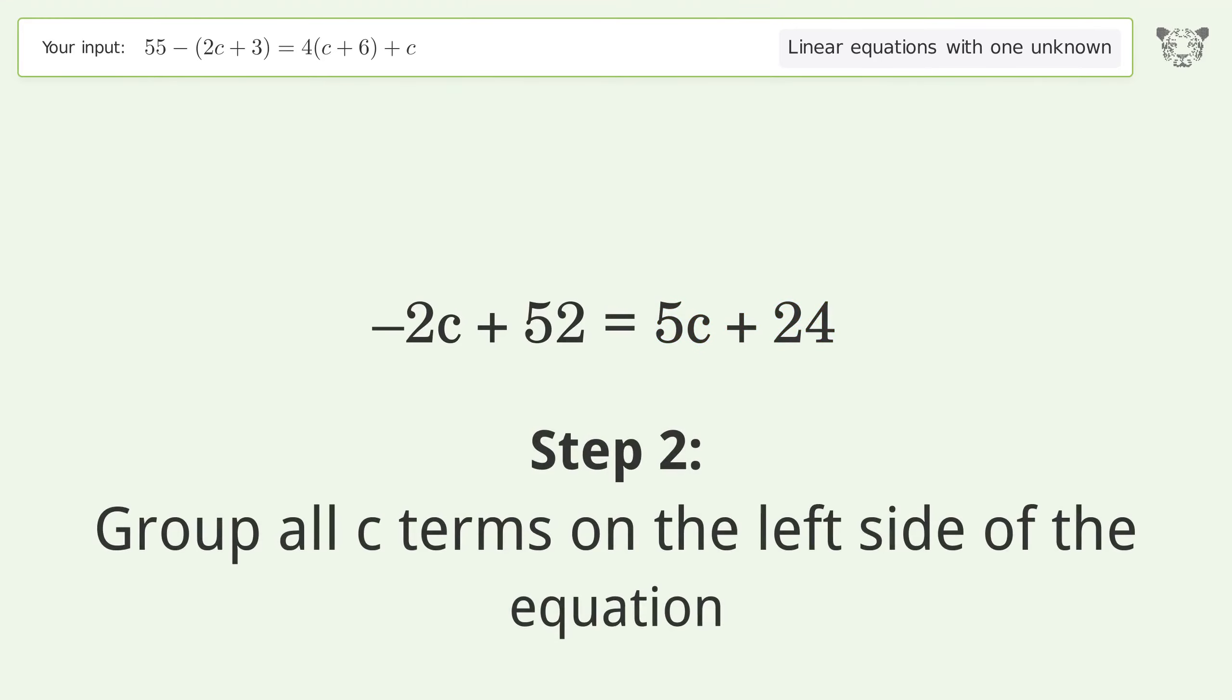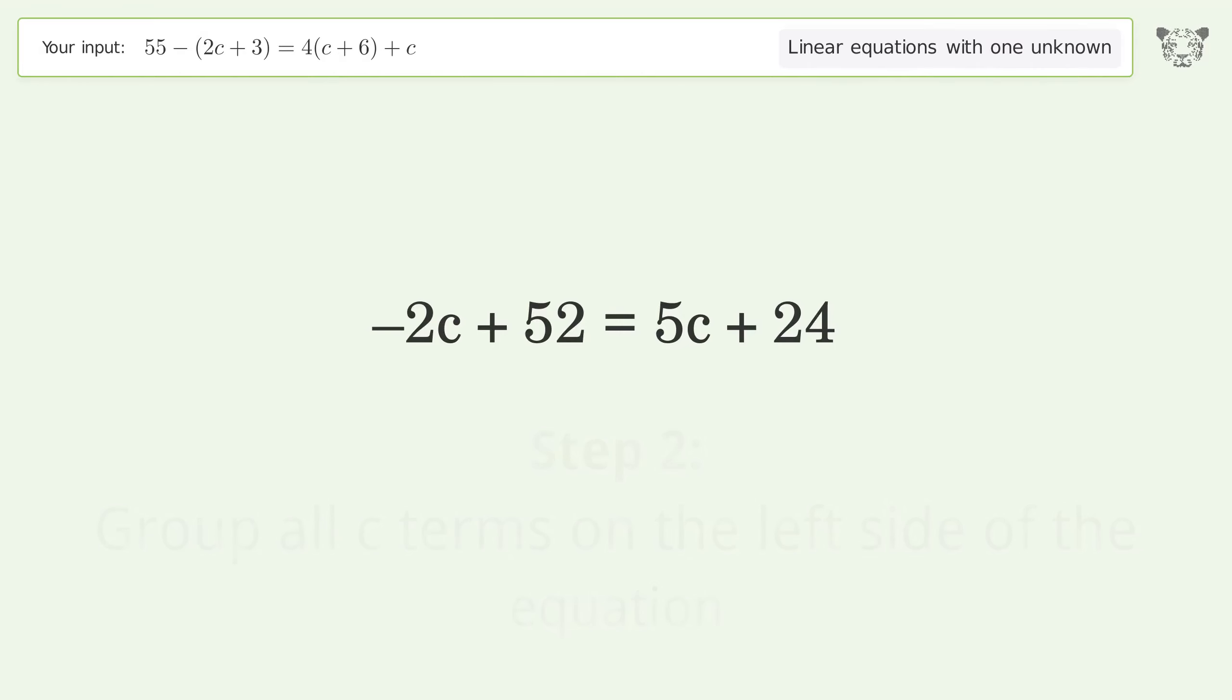Group all c terms on the left side of the equation. Subtract 5c from both sides. Group like terms. Simplify the arithmetic. Group like terms. Simplify the arithmetic.